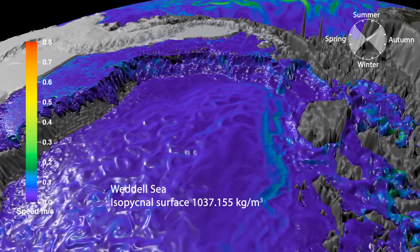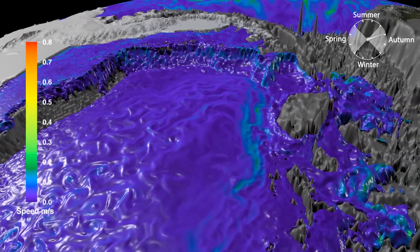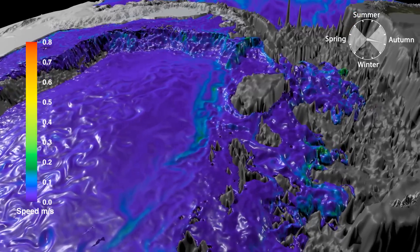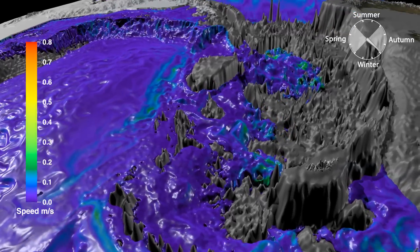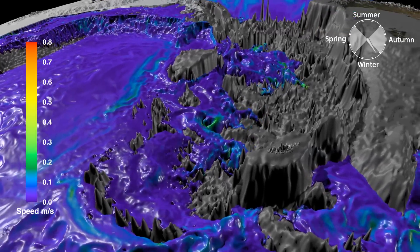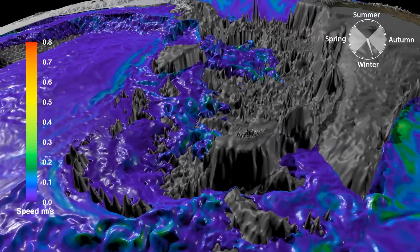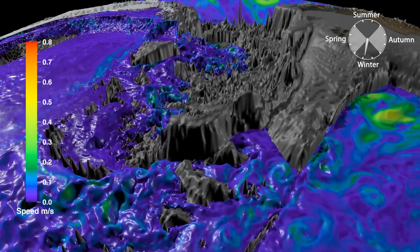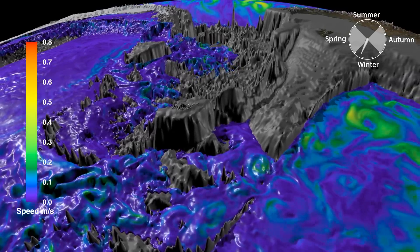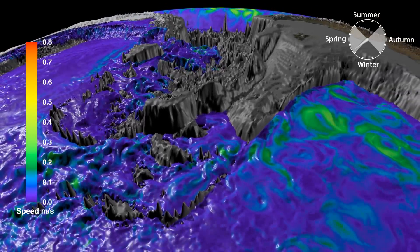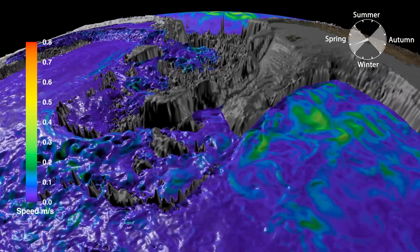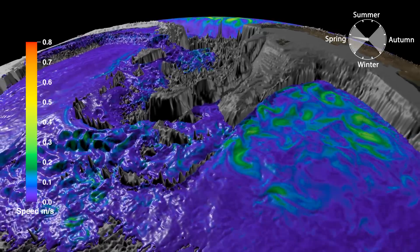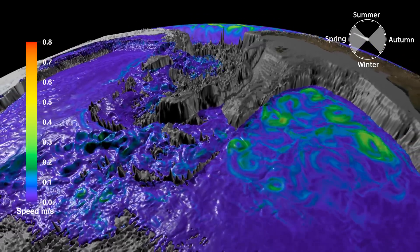Antarctic Bottom Water is very dense water formed by freezing conditions on the Antarctic continental shelf, in places such as the Weddell Sea. As the sea ice forms, it produces dense shelf water beneath the ice which then cascades over the continental shelf and into the ocean's abyss.